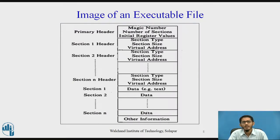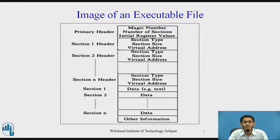Next we have the image of an executable file. The figure shows the logical format of an executable file as it exists in the file system, typically generated by the assembler or loader. It consists of four parts. The first is the primary header, which describes how many sections are in the file, the start address for process execution, and the magic number giving the type of the executable file. The second is the section headers, which describe each section in the file, giving the section size and the virtual addresses the section should occupy when running in the system.